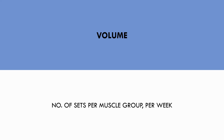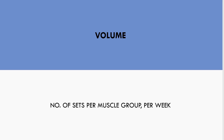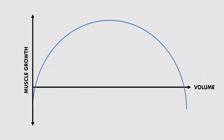Volume refers to the number of sets performed per muscle group per week. For example, if we perform 4 sets of pull-ups and 4 sets of rows twice per week, we accumulate a total of 16 sets for the back throughout the week. The volume-hypertrophy relationship probably follows an inverted U-shape. This means that more volume results in more muscle growth up until a point. Once we reach this point, we can't fully recover from the training we are performing, and hypertrophy gains aren't as good. And if we do extreme levels of volume, we may actually see no muscle growth at all.